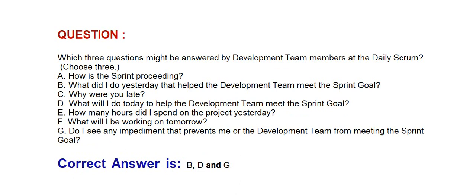Next question: Which three questions might be answered by development team members at the daily scrum? Choose three options. Option A: How is the sprint proceeding? Option B: What did I do yesterday that helped the development team meet the sprint goal? Option C: Why were you late? Option D: What will I do today to help the development team meet the sprint goal? Option E: How many hours did I spend on the project yesterday? Option F: What will I be working on tomorrow? Option G: Do I see any impediment that prevents me or the development team from meeting the sprint goal? Correct answer is Option B, D, and G.